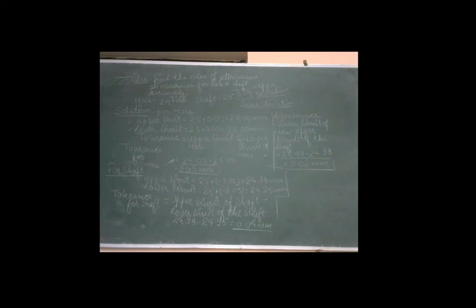For the calculation of the shaft, we first calculate the upper limit and lower limit. The upper limit of the shaft is 25 plus upper deviation of minus 0.02, which equals 24.98 mm. For the lower limit, we have 25 plus minus 0.05, which equals 24.95 mm. For the tolerance of the shaft, upper limit minus lower limit: 24.98 minus 24.95 equals 0.04 mm.